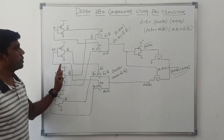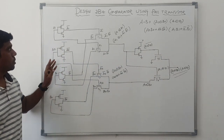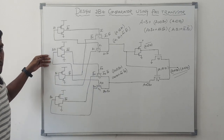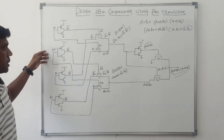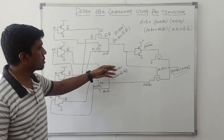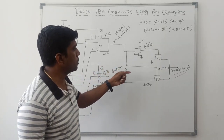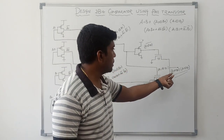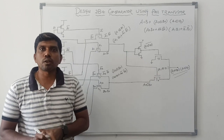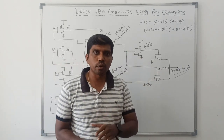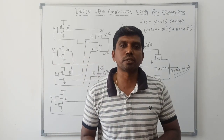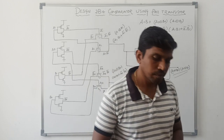It is a simple design. These four CMOS inverters are used to get the complement terms, and these six transistors are used to get the final output. I hope you understand the concept very well. If you are watching for the first time, kindly subscribe and support us to make more videos. Thank you.